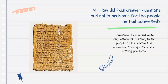Question number nine: How did Paul answer questions and settle problems for the people he had converted? Sometimes Paul would write long letters, or epistles, to the people he had converted, answering their questions and settling problems. Here is a picture of a primary source document of one of those letters. Remember, a primary source is something directly from that time period.